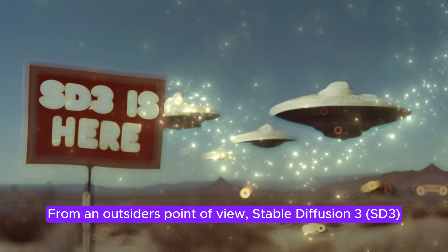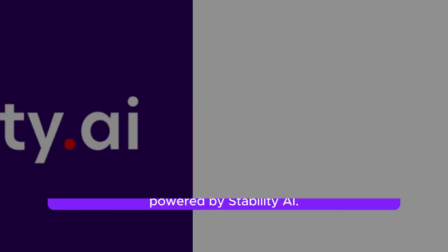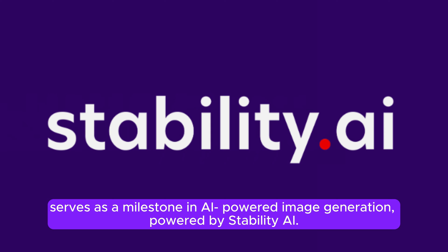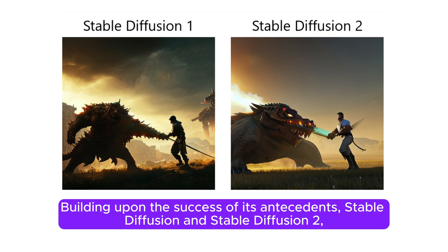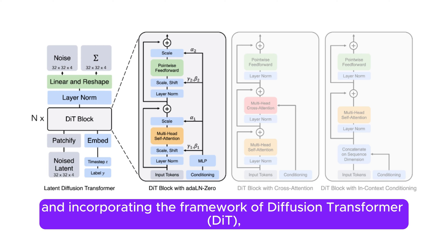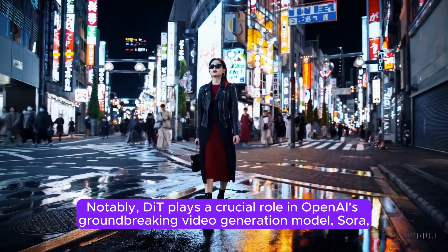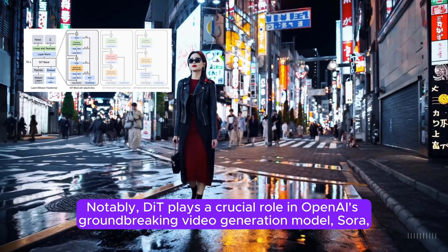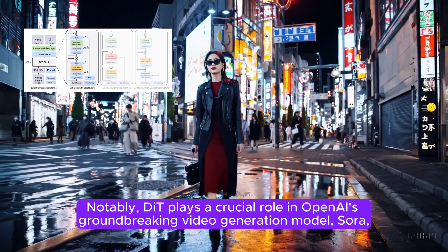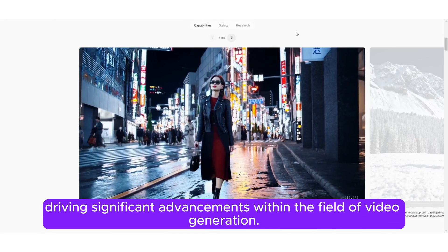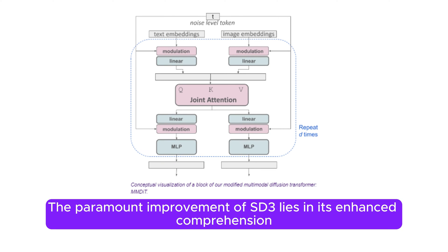From an outsider's point of view, Stable Diffusion 3 (SD3) serves as a milestone in AI-powered image generation, powered by Stability AI. Building upon the success of its predecessors, Stable Diffusion and Stable Diffusion 2, and incorporating the framework of Diffusion Transformer (DiT), SD3 pushes the boundaries of technology and innovation. Notably, DiT plays a crucial role in OpenAI's groundbreaking video generation model Sora, driving significant advancements within the field.